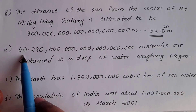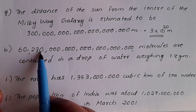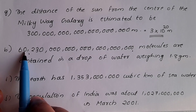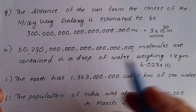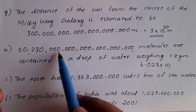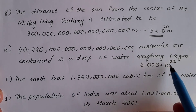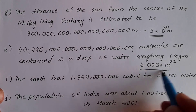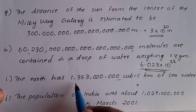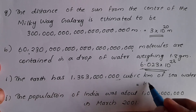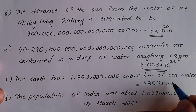Next question — this number in standard form. The digits are 6, 0, 2, 3. Moving to the next number: 1.353 into 10 raise to — counting digits 3, 6, 9, 10 — total number of digits is 10, and 10 minus 1 is 9. So the answer is 1.353 into 10 raise to 9.